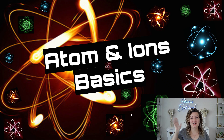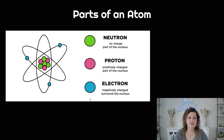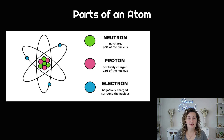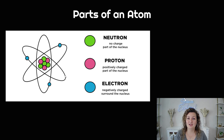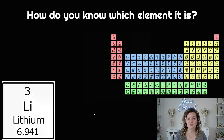Hey everybody, this is Budashan here. Today we're going to be talking about atoms and ions. So first let's start with the basics — the parts of an atom. We have a nucleus in the center, and inside that nucleus we have protons and neutrons. Protons are positive, neutrons are neutral. And then around that we have an electron cloud where our electrons are found, and those are negatively charged particles.